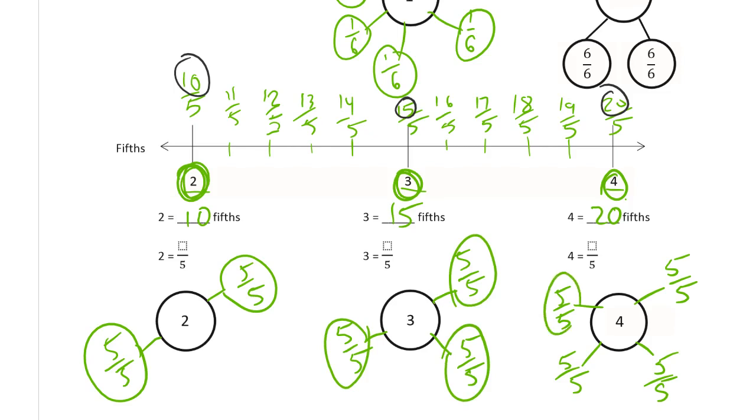I figured out that it's easier to write the fractions first and then draw the circles around them. Because when I draw the circles first, in these fraction bonds, I always make them too small, and I don't have room to write the fractions inside them.